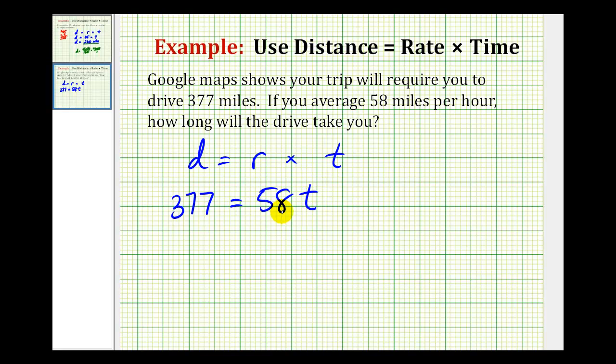So here if we want to solve this for t, these are attached by multiplication. So we're going to have to divide both sides of the equation by 58.